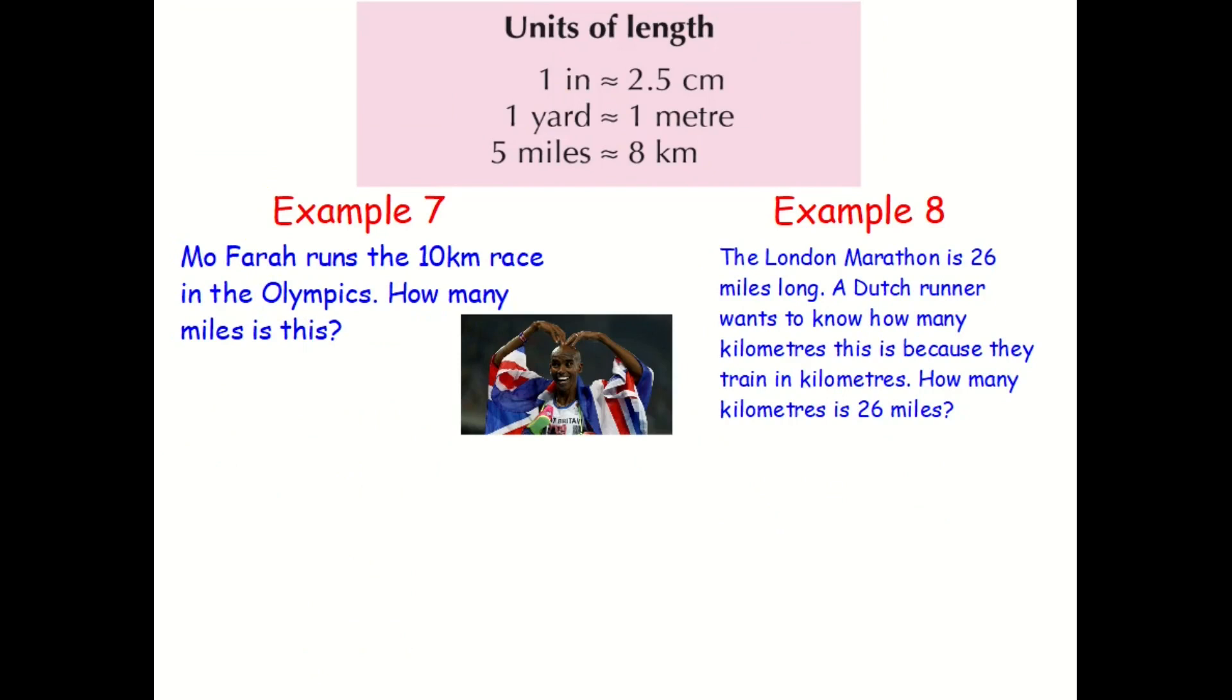Final two examples. Example number seven. Mo Farah runs the 10 kilometre race in the Olympics. How many miles is this? Well, let's quote that really important conversion. Five kilometres. Oh, not five kilometres. Five miles is approximately equal to eight kilometres. So five miles is roughly equal to eight KM. But this time we want 10 KM. Well, that's a bit of a tricky one because how am I going to get from eight to ten?